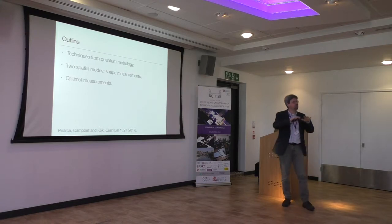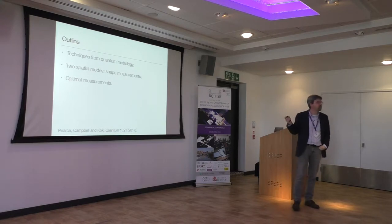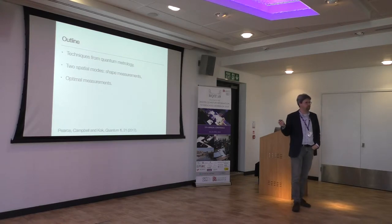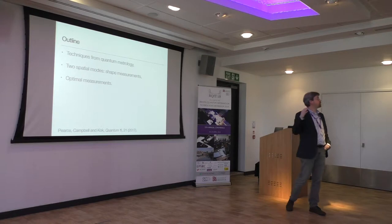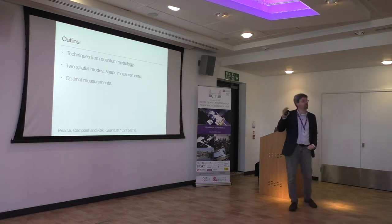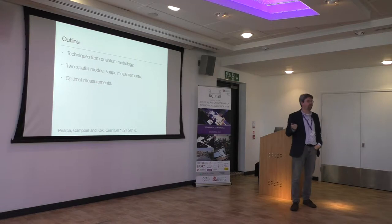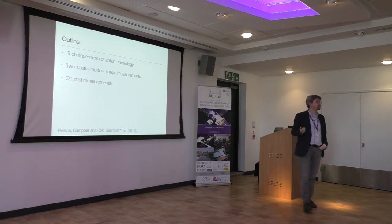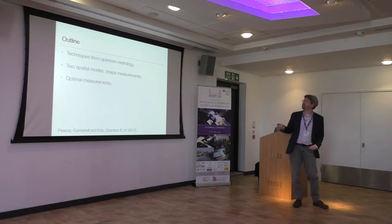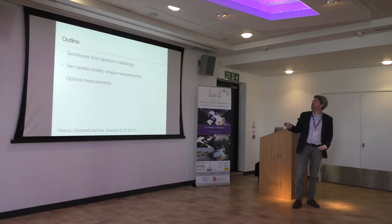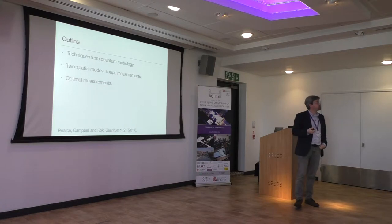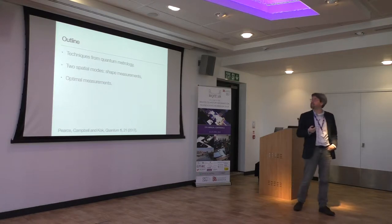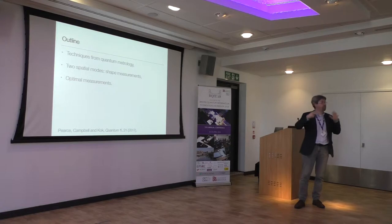I'm going to give you an overview. There are a lot of equations on the screen — they're there to show that we actually did work, so don't worry too much about the contents, it's more the overall structure. We call that proof by intimidation. I will look at two spatial modes because I'm a theorist and two is already hard enough. We want to look at what kind of shapes you can see, and then I'll tell you the optimal measurements for this kind of system.